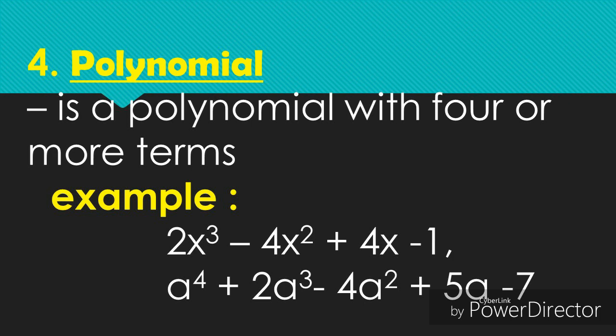Number four is the multinomial — a polynomial with four or more terms. Example: 2x cubed minus 4x squared plus 4x minus 4, which has four terms. The second example is a to the 4th plus 2a cubed minus 4a squared plus 5a minus 7, which has five terms.